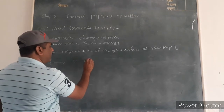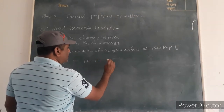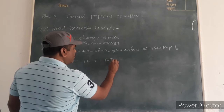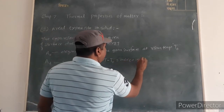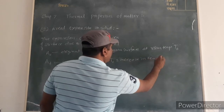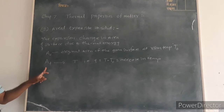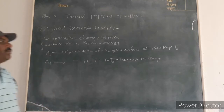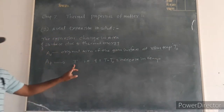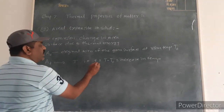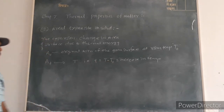The increase in temperature T is equal to T minus T0, and the area is also increased from A0 to AT as the temperature increases from T0 to T. Hence the increase in temperature is delta T equal to T minus T0.